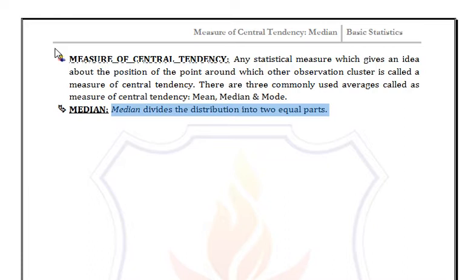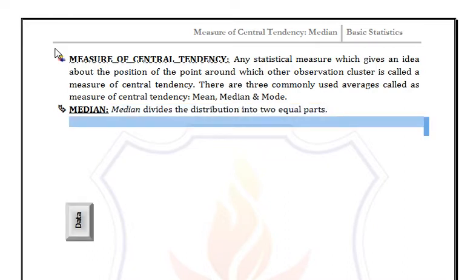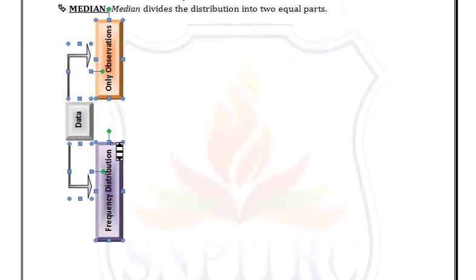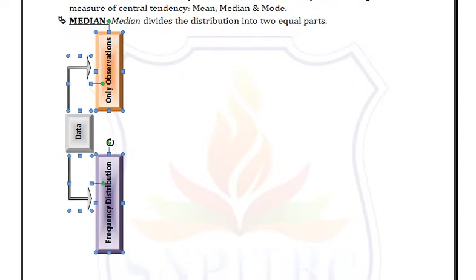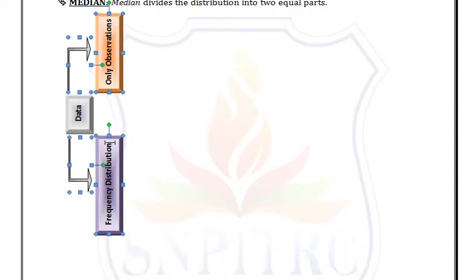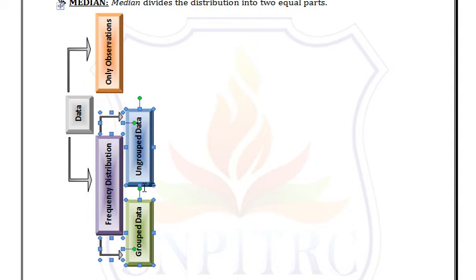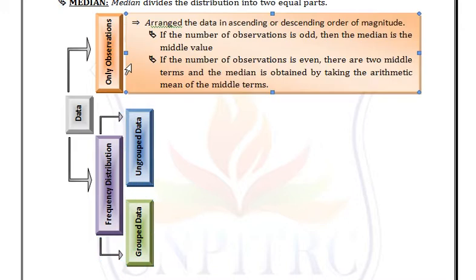We have two types of data: only observations and frequency distribution. In frequency distribution we have ungrouped data and grouped data. For only observations, first arrange the data in ascending or descending order of magnitude.